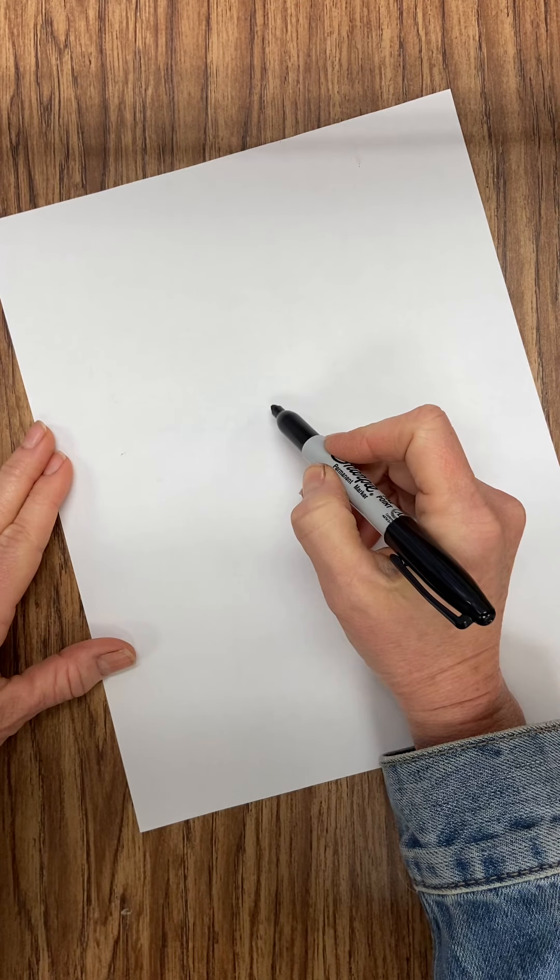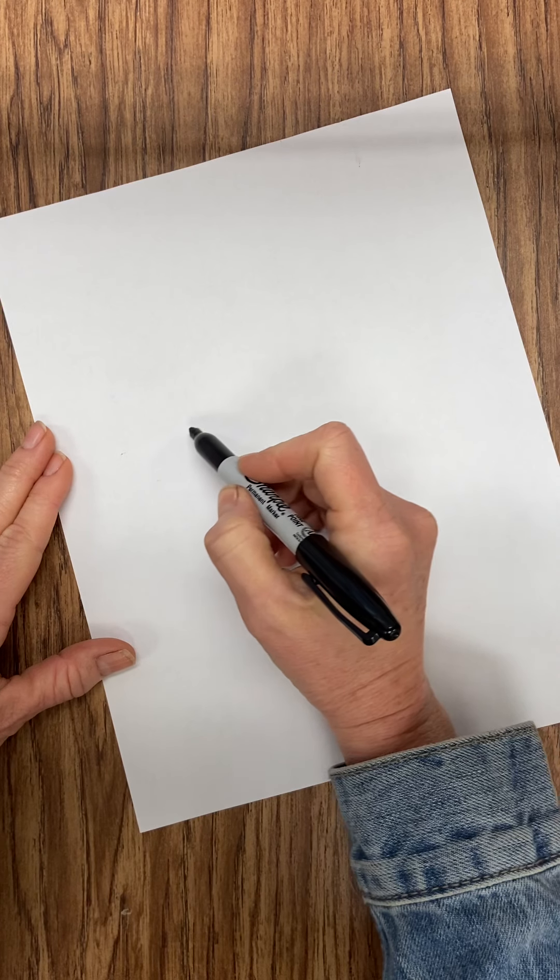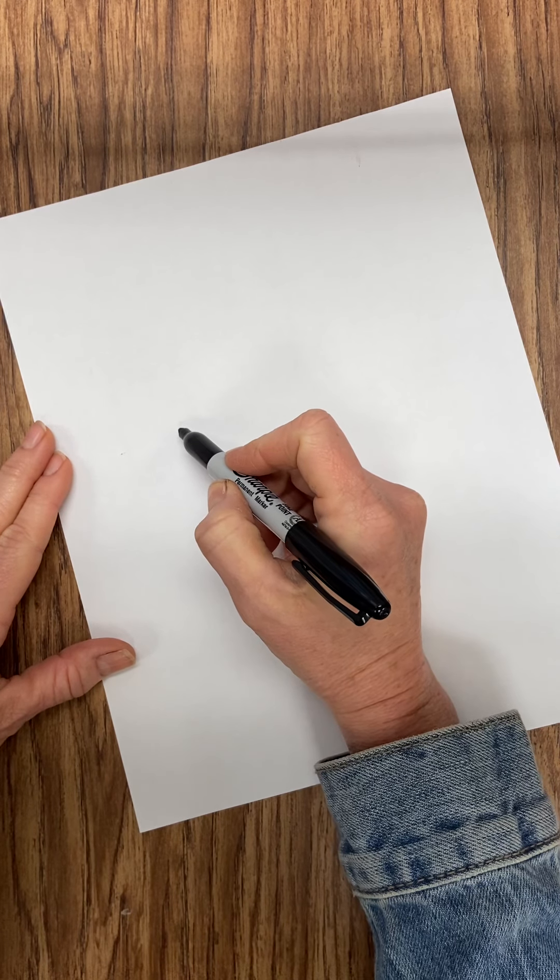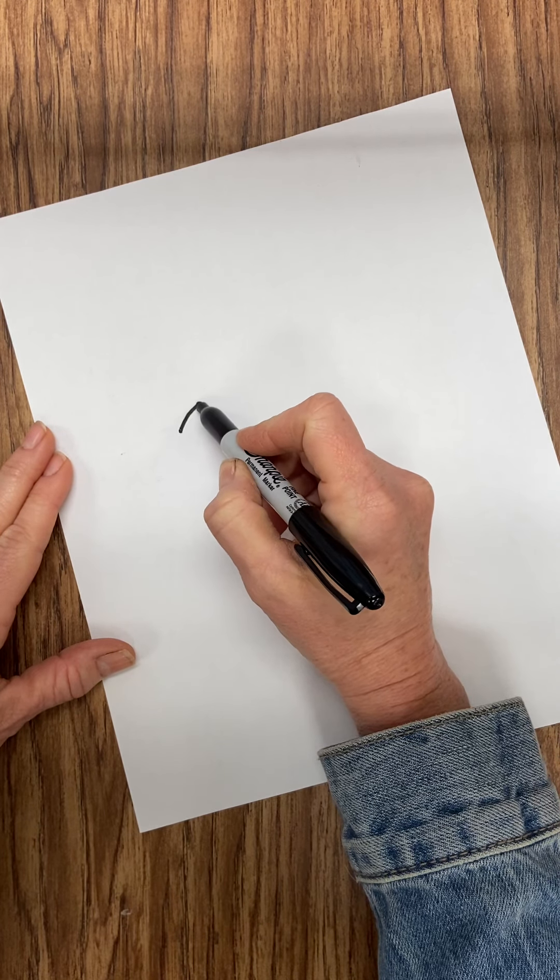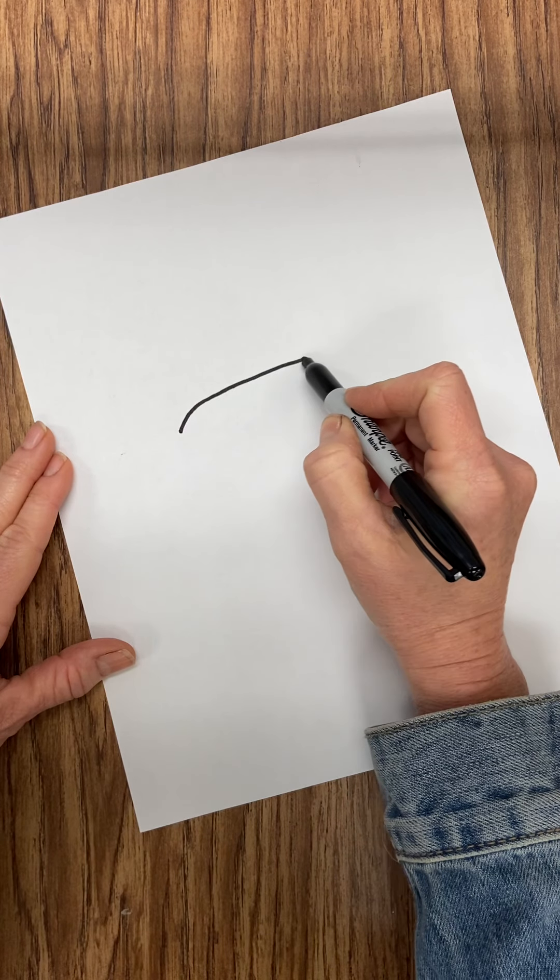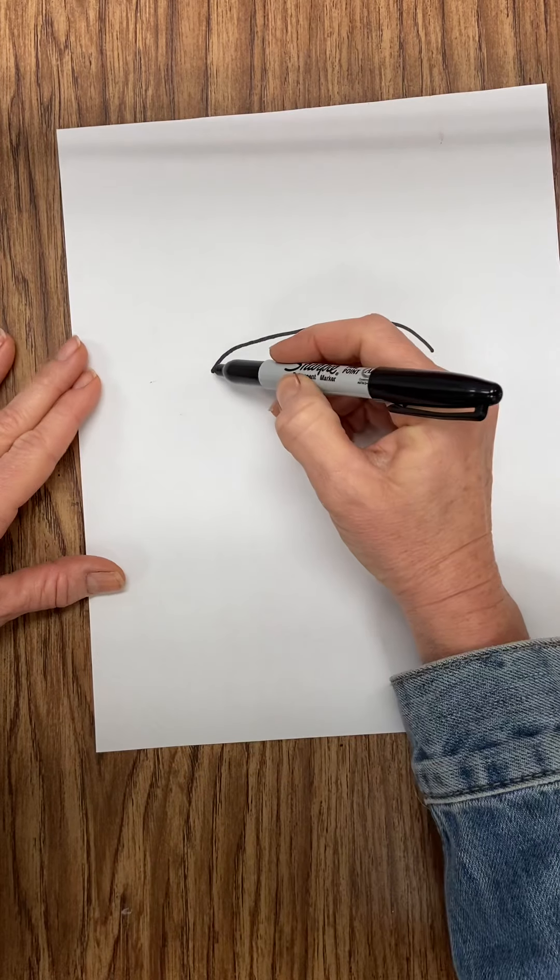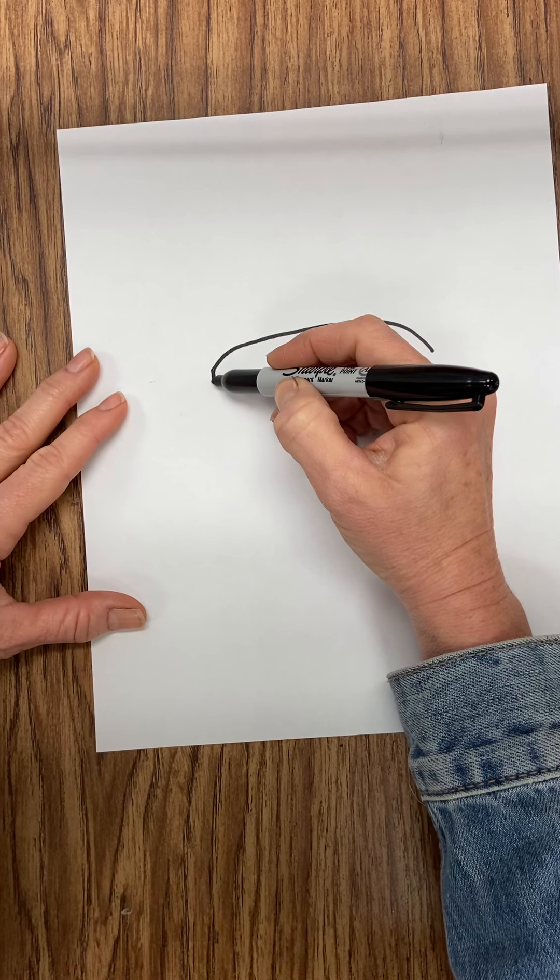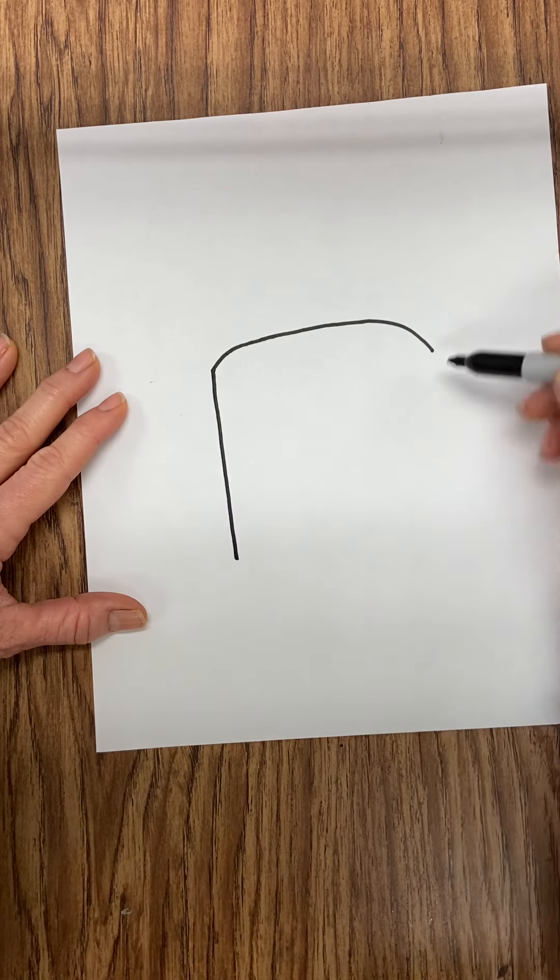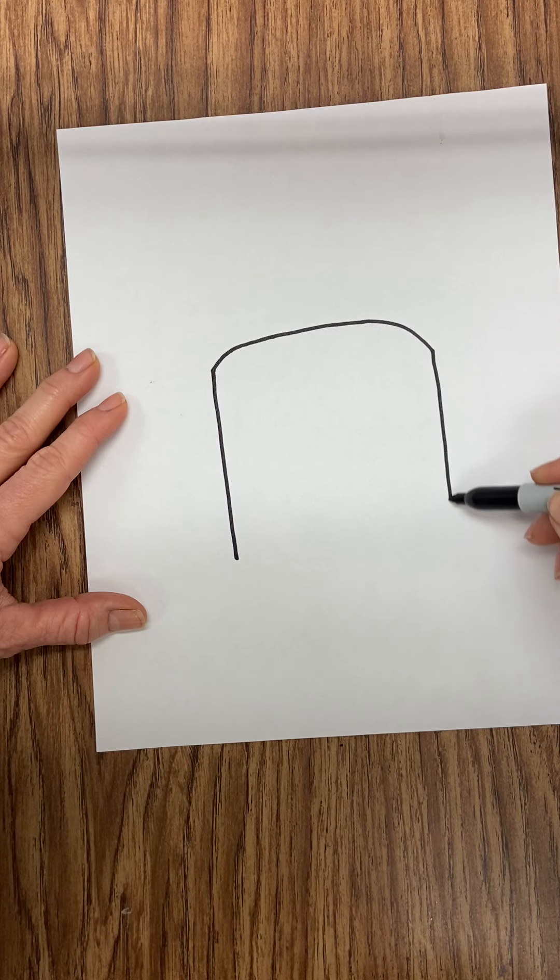So starting not directly in the center of the paper, I'm going to move over to the side a little bit and I'm going to go up, over, and down. Then I'm going to draw two lines that come down, just like this.